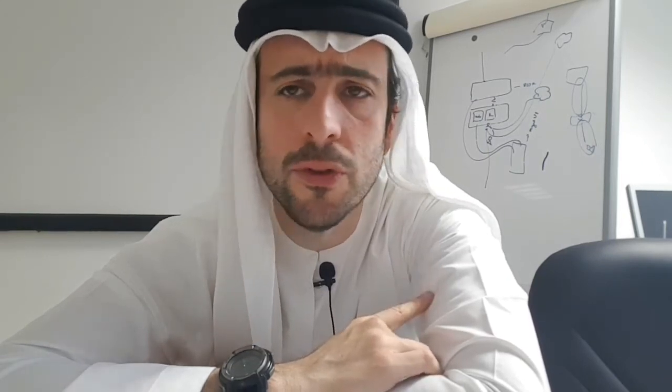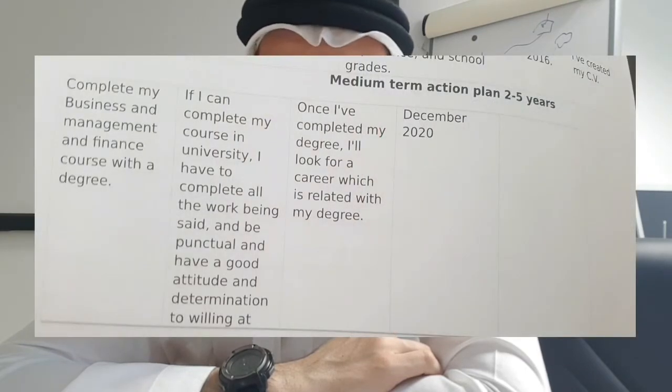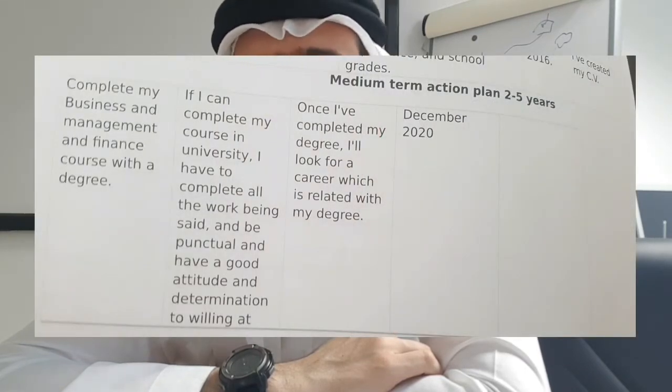Once you finish your short term career plan, you're going to then create a medium term — that's two to five years. Now your objectives are probably going to be more about either entering the workforce or going to university. There are a lot of different steps in there, whether it's applying to universities, whether it's updating your CVs, whether it's getting references — there's tons of things you're going to have to do to achieve those two to five year goals. Look in the assignment brief — all the details are in there.